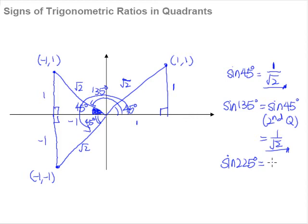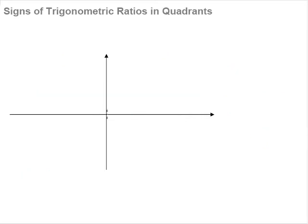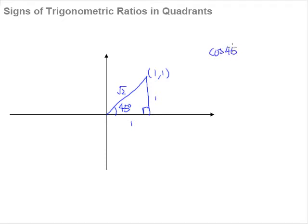Now let us investigate the other trig ratios. Let's say cosine. We have the same 45-degree acute angle in the first quadrant, so this point will be (1, 1), giving us lengths of 1, 1, and square root 2. To find cosine 45 degrees in the first quadrant: it will be the adjacent side, which is 1, over the hypotenuse side, which is square root 2. So we will have 1 over square root 2 — positive.